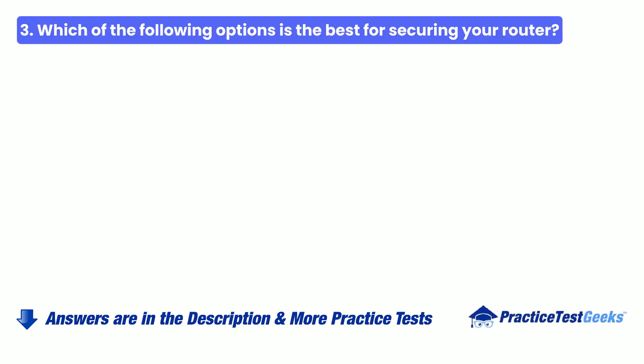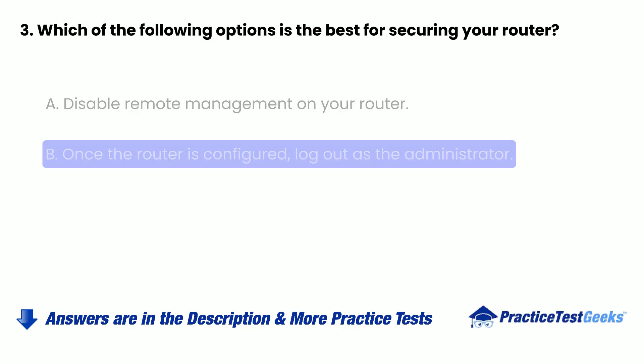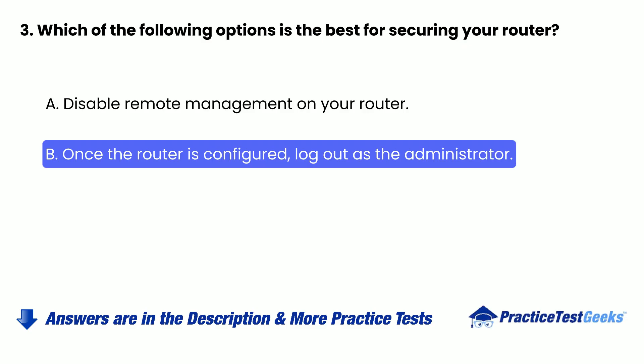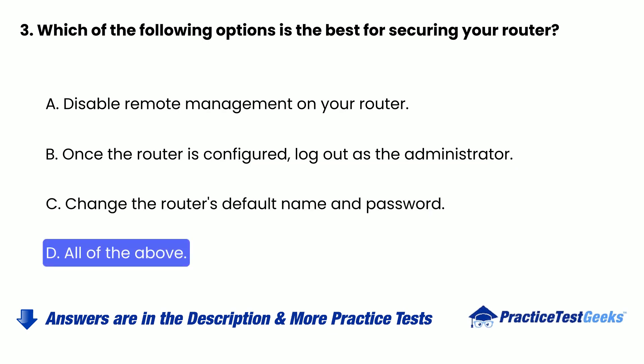Question 3: Which of the following options is the best for securing your router? a. Disable remote management on your router. b. Once the router is configured, log out as the administrator. c. Change the router's default name and password. d. All of the above.